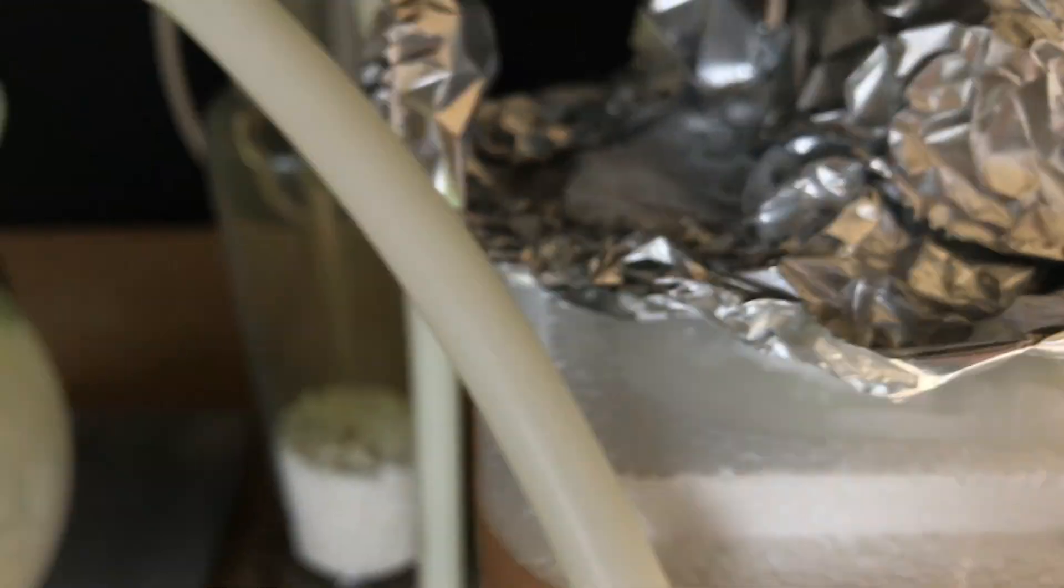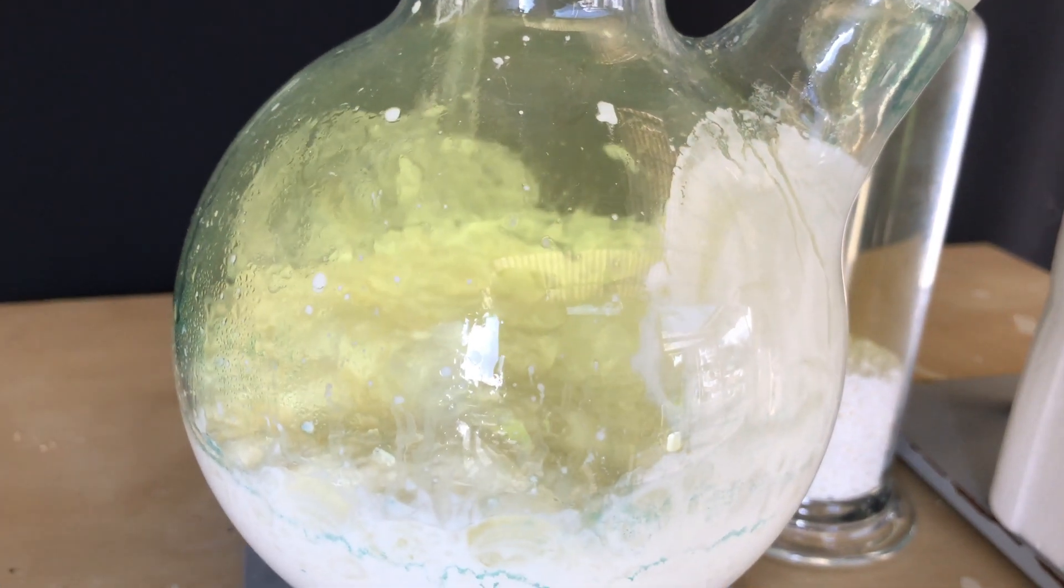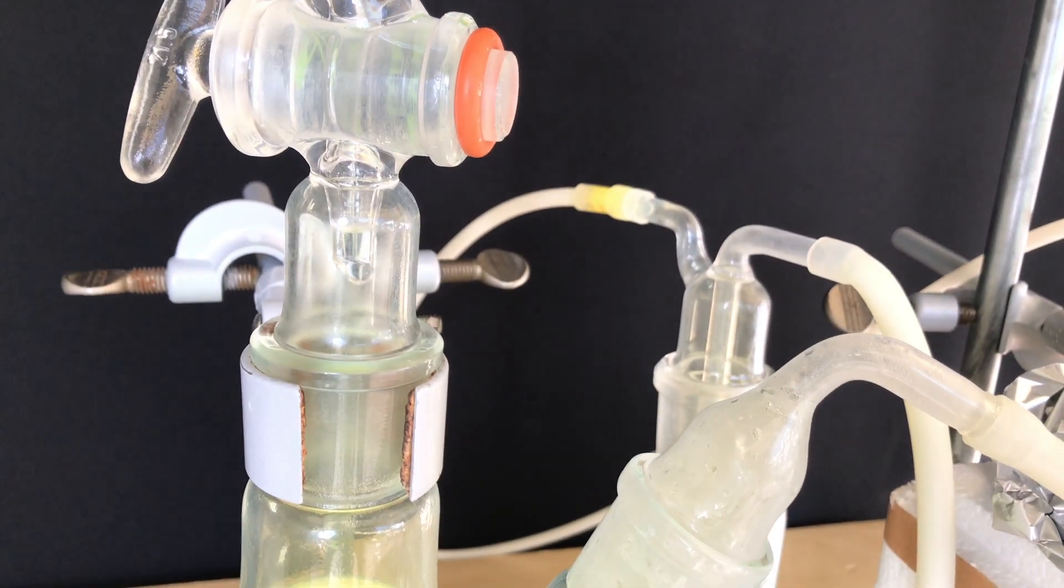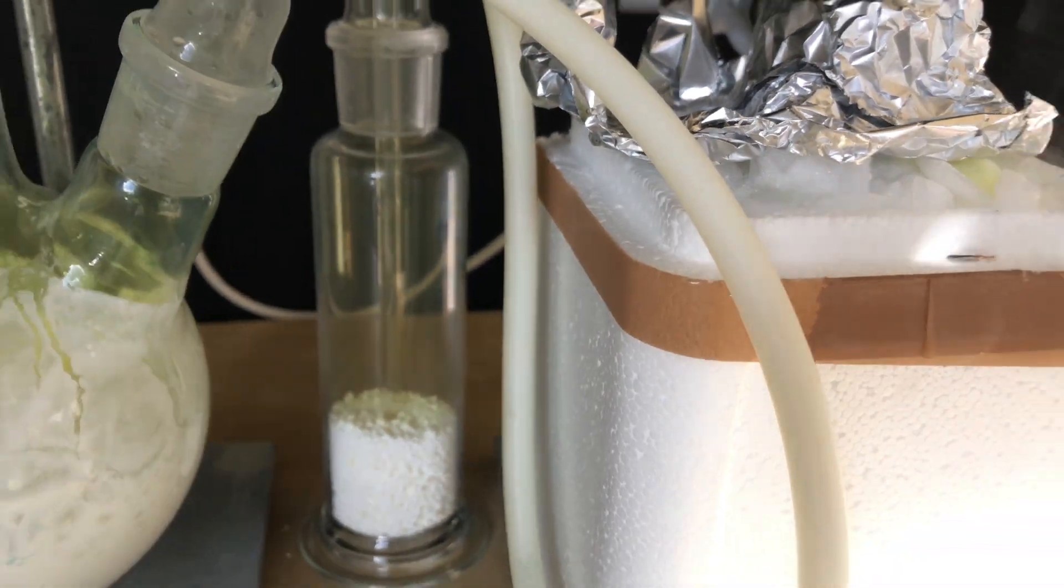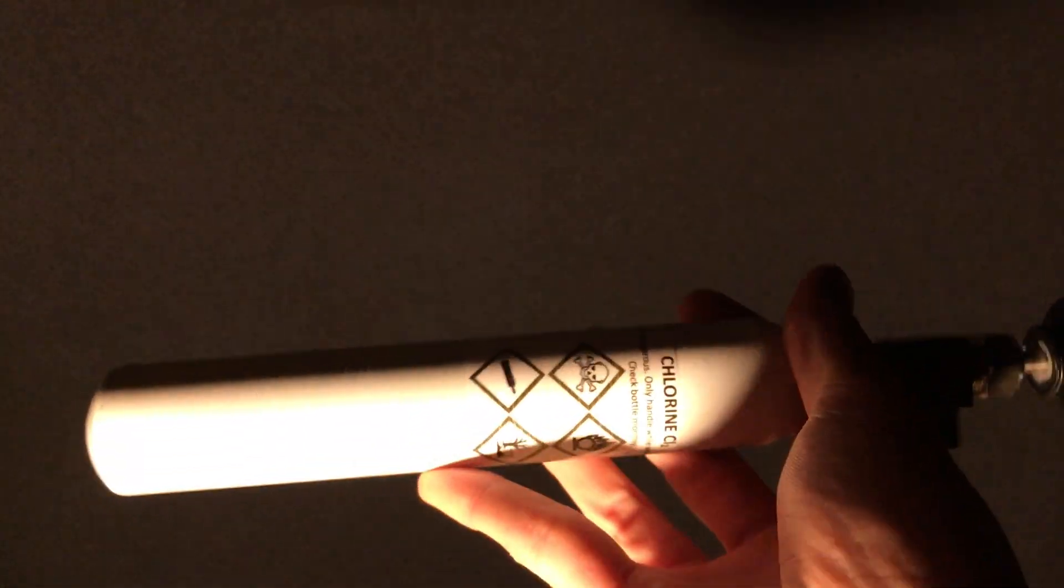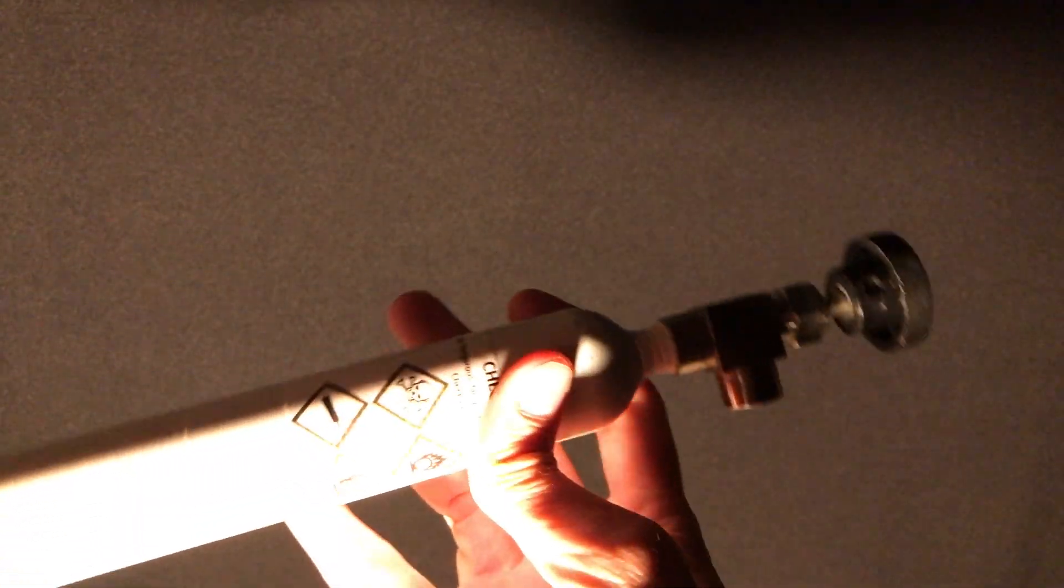In the end we were left with about 90g of perfectly dry chlorine gas in my DIY lecture bottle, which is dangerous because it could leak at any time. I am not encouraging you to try this anyways, and I am storing this DIY lecture bottle in a safe place.